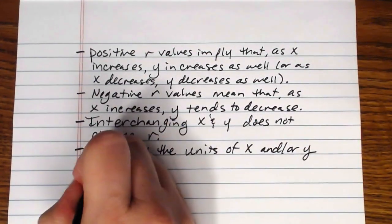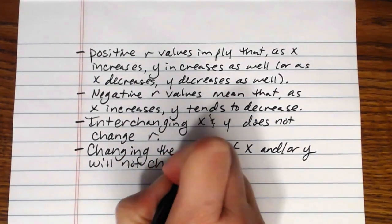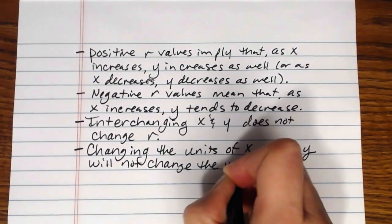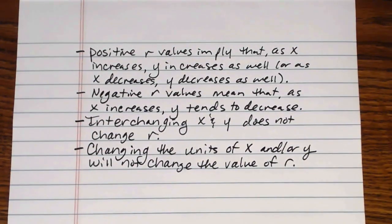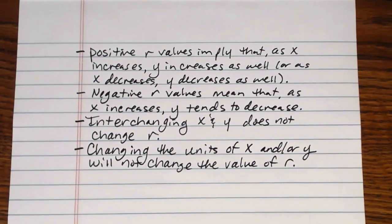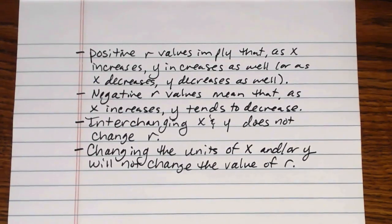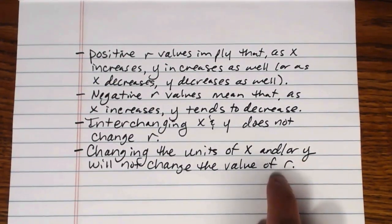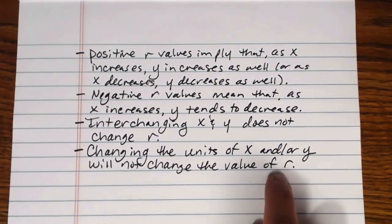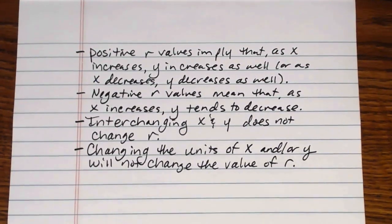Because r is a unitless measurement, changing the units of x and/or y will not change the value of r. For example, if I've been doing an entire data analysis project where my x variable was measured in inches and partway through I decide to change everything to centimeters instead, that's not going to have an impact on the value of r. The strength and direction of that relationship will remain unchanged.